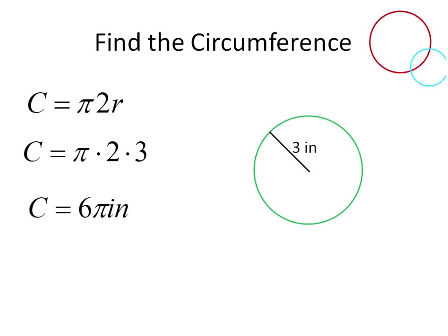Again, our exact circumference, 6π inches. Our approximate circumference, we change pi to being 3.14, multiply 6 times 3.14, and you'll get 18.84 inches. That's going to be your approximate distance. And that is how you solve the circumference when you're given a radius.